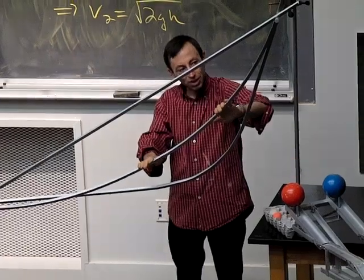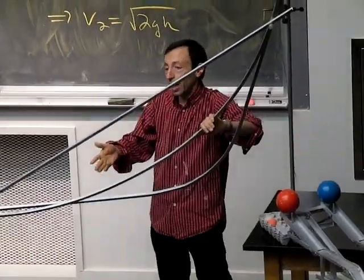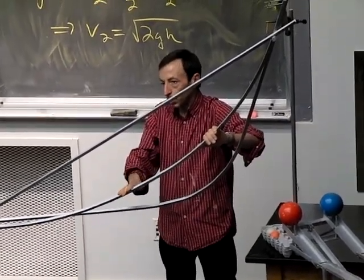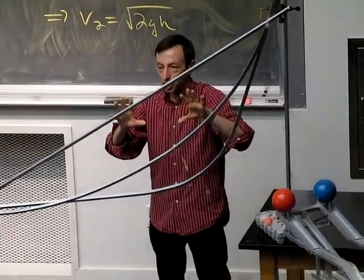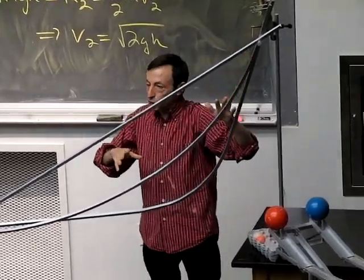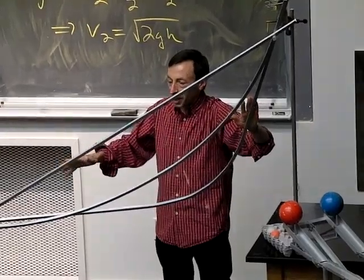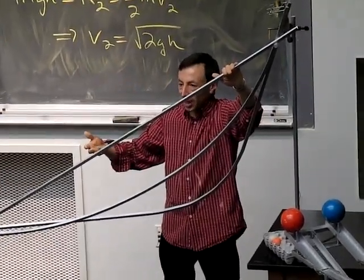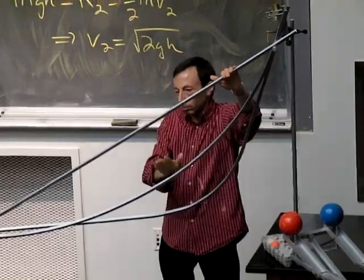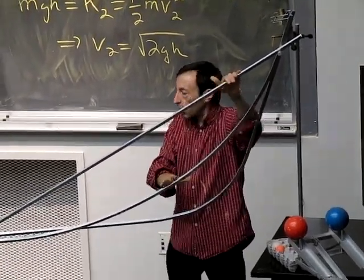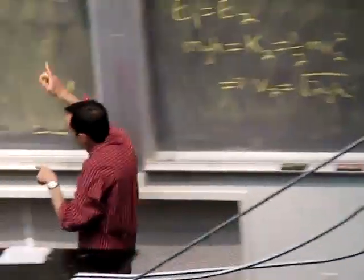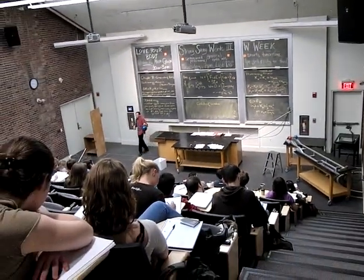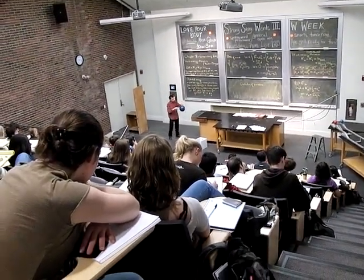What works just right is this — you can work out the mathematical form of that shape where you optimize: not too steep, because then you have a very long path; not too flat, because then you don't get the speed advantage. With calculus of variations and F equals MA you can work that out. Energy will not do that for you.